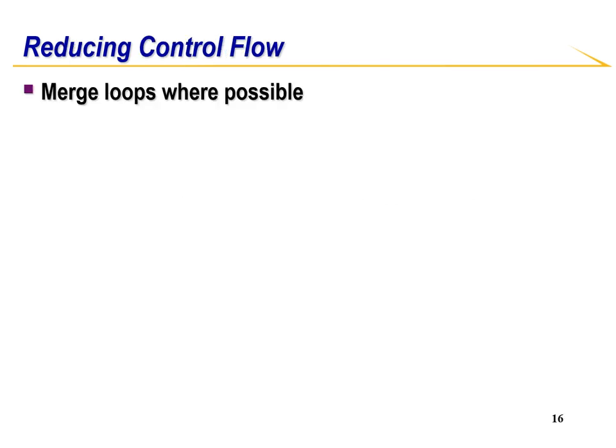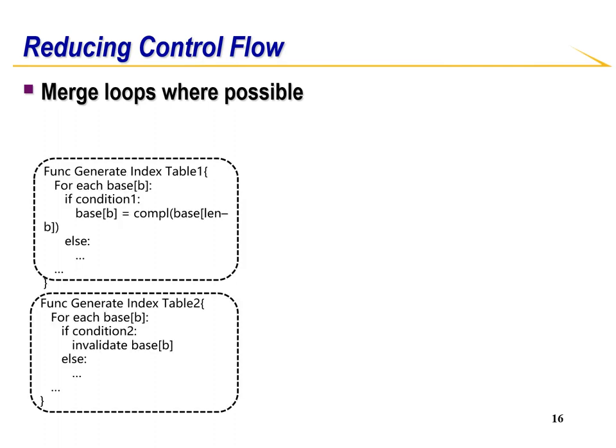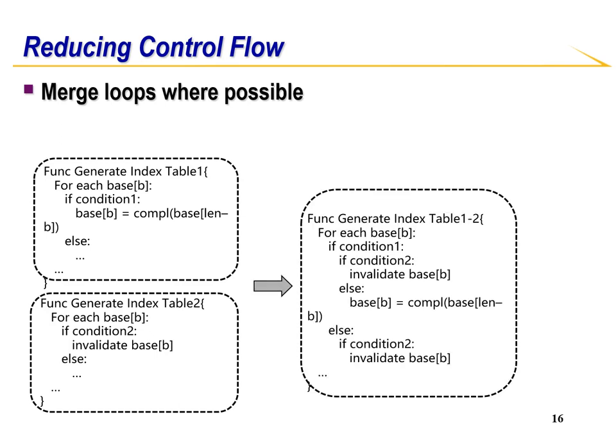In the original software version of GATK, each covariate had its own index generator. On an FPGA, we want to reduce this redundancy. Therefore, we merge the loops together where possible. Here is a code snippet — since each base needs to be processed, it is possible to merge the loops together, creating equivalent conditions, as seen here.